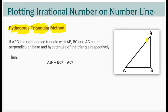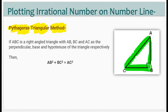What is the Pythagoras theorem? Suppose ABC is a right-angled triangle. AC will be the hypotenuse, AB will be the perpendicular, and BC will be the base. There is a relation between hypotenuse, perpendicular, and base: hypotenuse squared equals AB squared plus BC squared, or AB squared plus BC squared equals AC squared. With the help of this theorem, we will plot an irrational number on the number line.